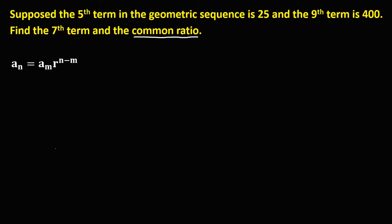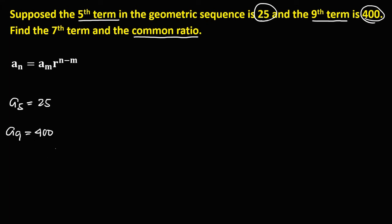In the given, we have the fifth term, that's a sub 5, and the fifth term is 25. So a sub 5 is 25. Also the ninth term, that's a sub 9, and the ninth term is 400. So a sub 9 is 400. From these two given terms, the last term is a sub 9, so a sub 9 is a sub n, and a sub 5 is a sub m.